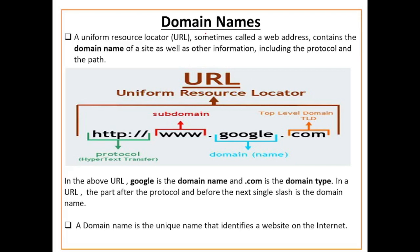Hello everyone. In this video you will get to know what are domain names and what is a URL — sometimes called a web address. URL is the web address of any web document, किसी भी website का web address होता है. A URL contains the domain name of a site as well as other information including the protocol and the path.